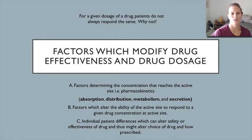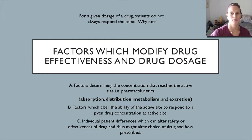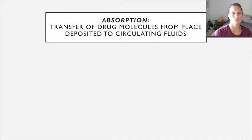We're going to run through several different variables. First, we'll look at factors determining the concentration that reaches the active site — that has a lot to do with pharmacokinetics — so we'll talk about absorption, distribution, metabolism, and excretion. Then we'll talk about things that alter the ability of the active site to respond to the drug, and then individual patient variability. Those pharmacokinetic terms are absorption, distribution, metabolism, and excretion.